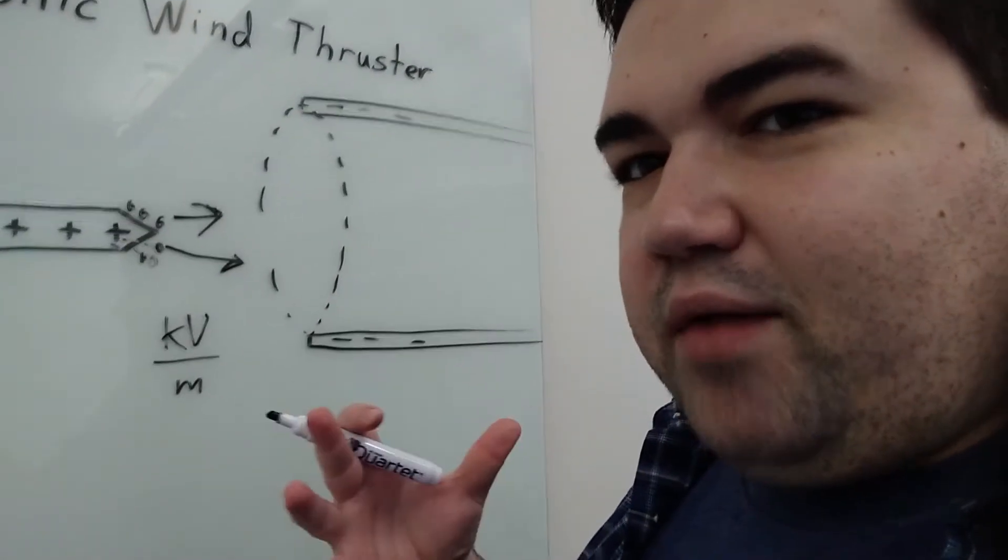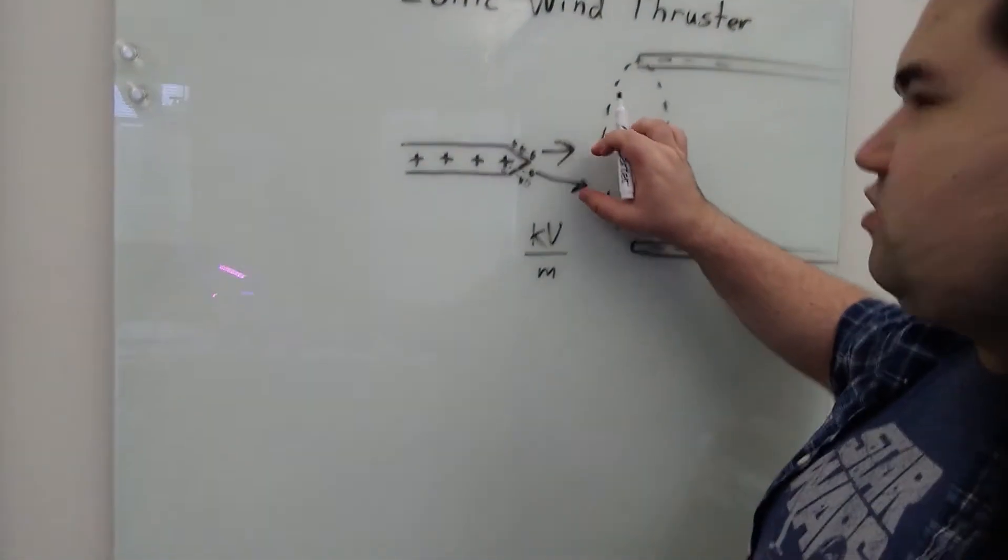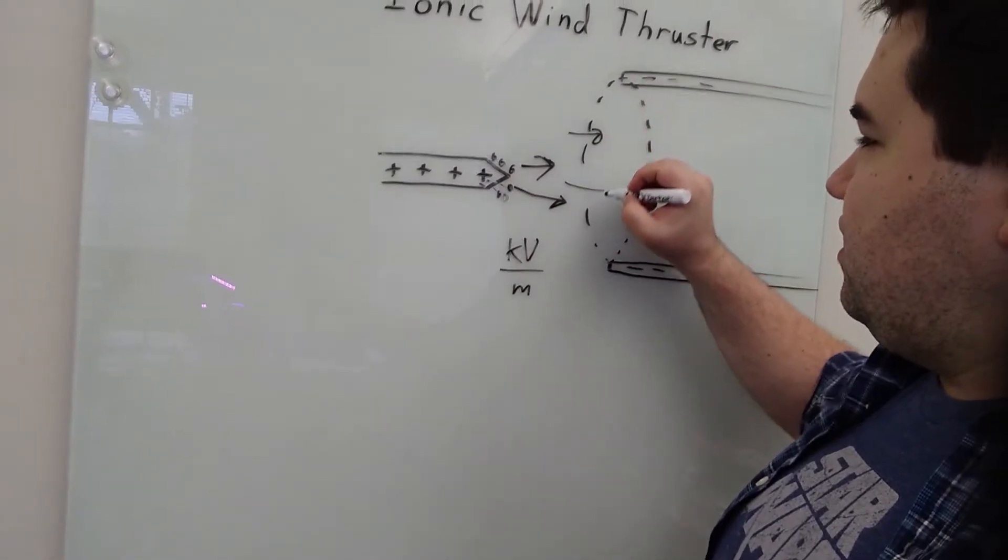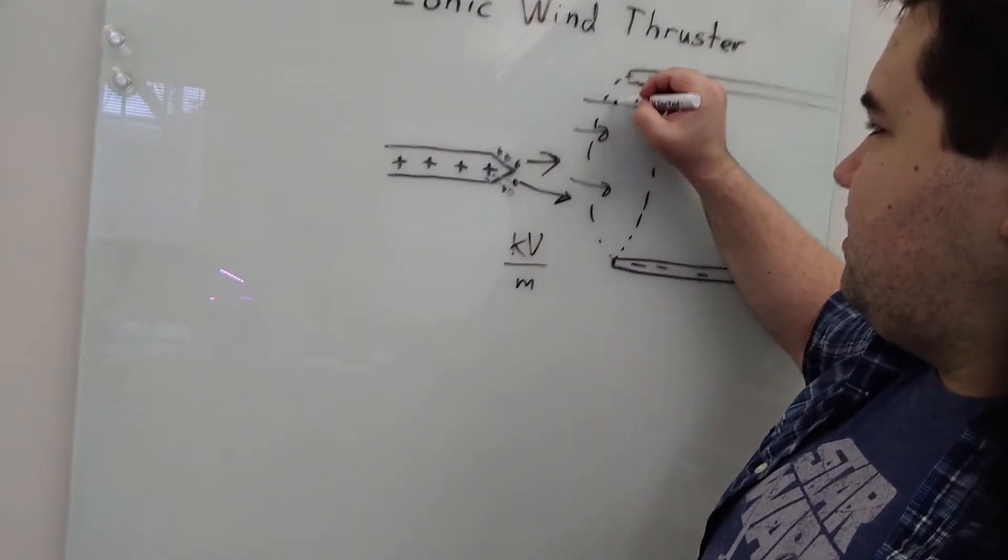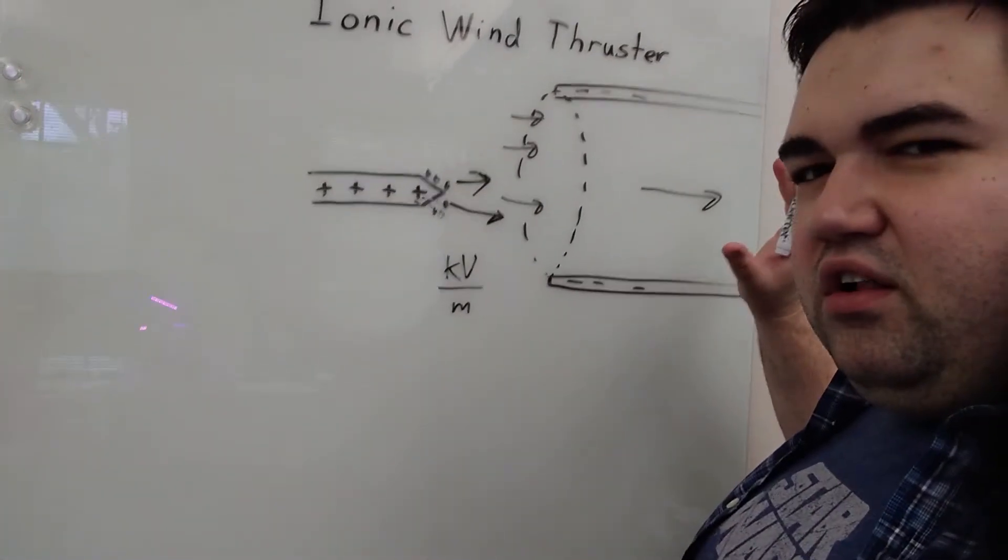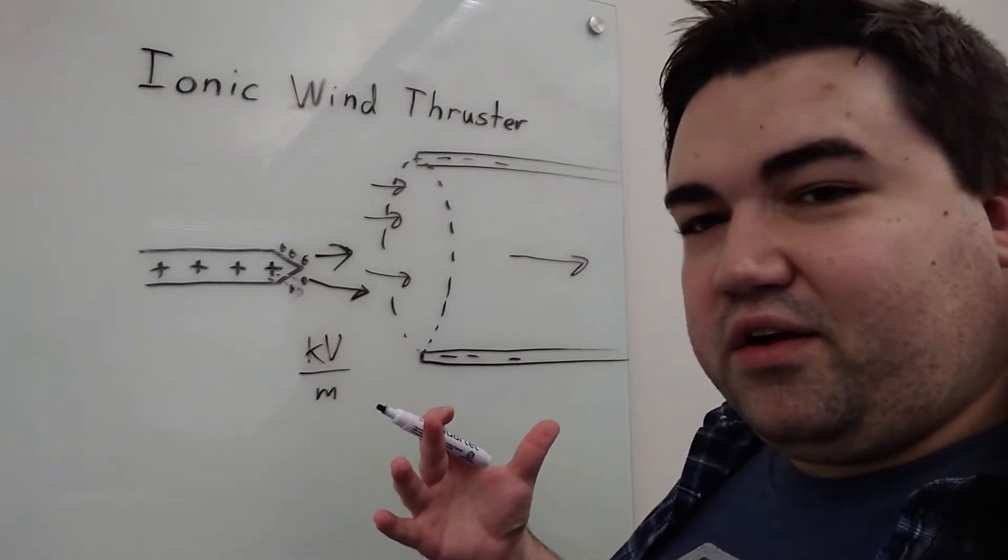But in that process they actually transfer momentum to the neutrals. And that causes a net wind or net thrust in the direction of the pipe. So you actually produce a very small amount of airflow within the pipe, therefore producing an ionic wind.